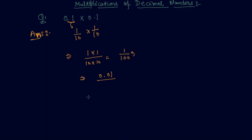So what is the procedure to multiply two decimal numbers? First you will convert each decimal number into fraction. Then you will multiply these two fractions, and after multiplying the fractions, the result will come as a fraction. You then have to convert the fraction back into decimal, because the question was asked in decimal and we have to give our answer in decimal.